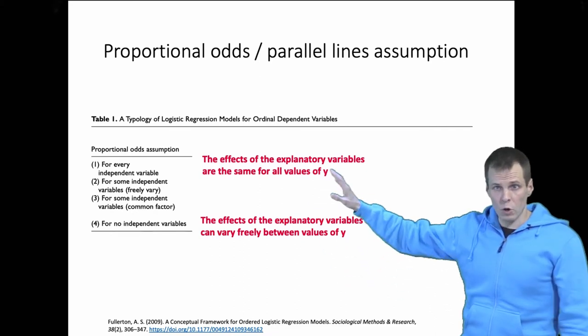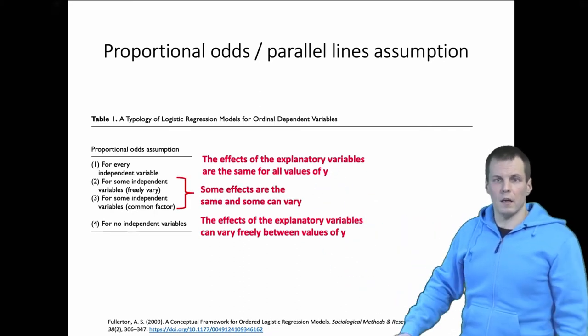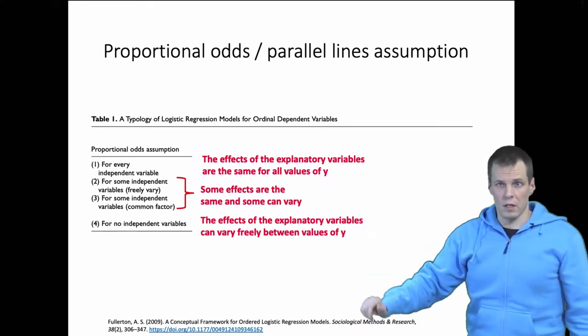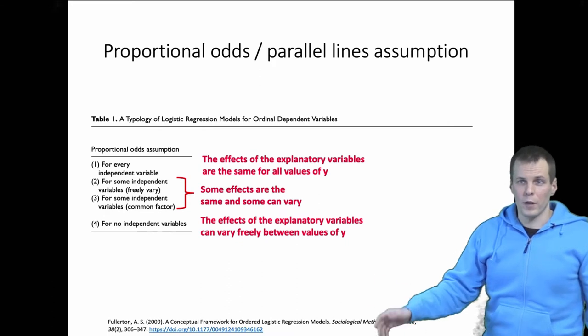And then we have two different categories that allow some effects to vary and some effects are constant. For example, we could have that in a running race.